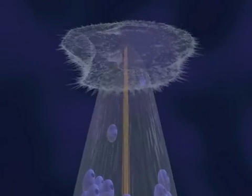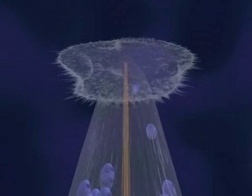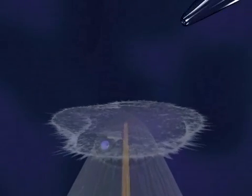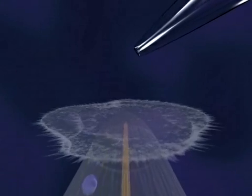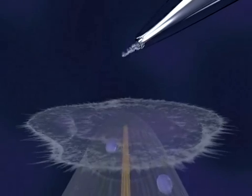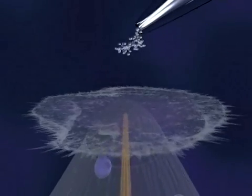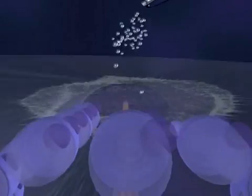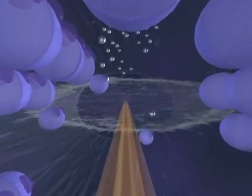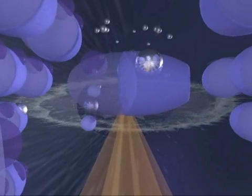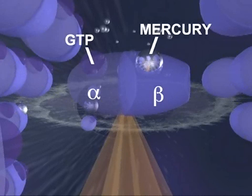To understand how mercury causes this degeneration, let us return to our illustration. As mentioned before, tubulin proteins link together during normal cell growth to form the microtubules which support the neurite structure. When mercury ions are introduced into the culture medium, they infiltrate the cell and bind themselves to newly synthesized tubulin molecules. More specifically, the mercury ions attach themselves to the binding site reserved for guanosine triphosphate, or GTP, on the beta subunit of the affected tubulin molecules.